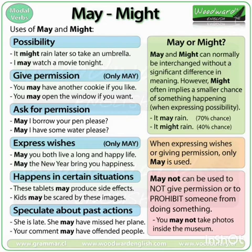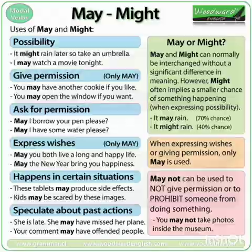For giving permission, 'may' is used: 'You may open the window if you want.' For asking permission: 'May I get in?', 'May I borrow your pen please?', 'May I have some water?' For expressing wishes: 'May God bless you', 'May you both live a long and blessed life.' When expressing wishes or giving permission, only 'may' is used, not 'might.'